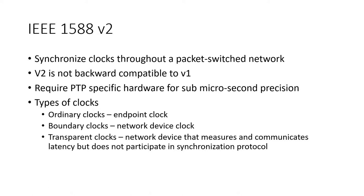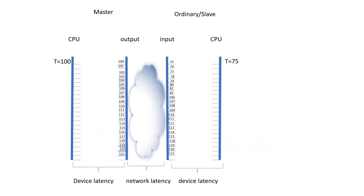So how does that work? For clocks, we've got a master clock and a slave clock. The master has the time that we want all of the devices in the network to maintain. I've made it so that the master has a time of 100 and the slave has a time of 75. I'm not giving units here because the precision of the timing is going to depend on the application, the devices, and the hardware in the network, and some applications require more precision than others.